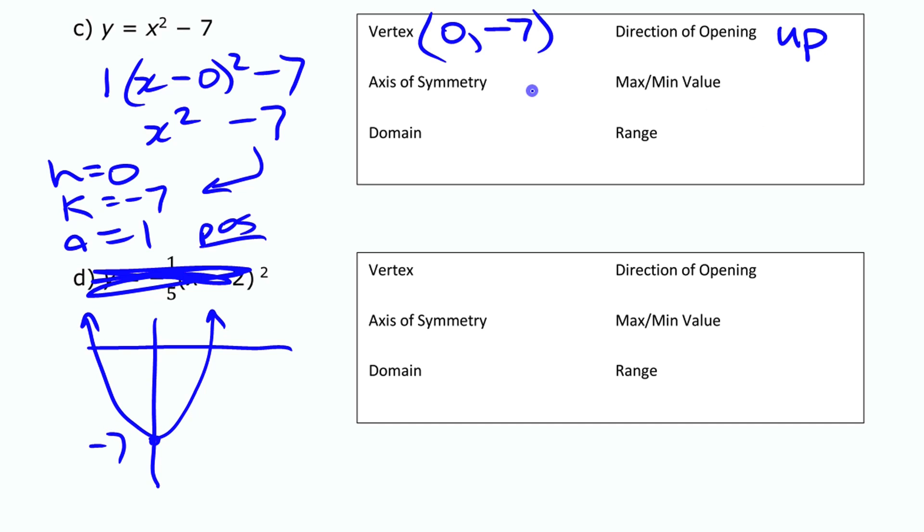All right, so it has a minimum value of negative 7. It has an axis of symmetry right down the middle there on the y-axis. So we say x equals 0. The domain again is all real numbers. And the range is the other way of saying this, y is greater than or equal to negative 7.